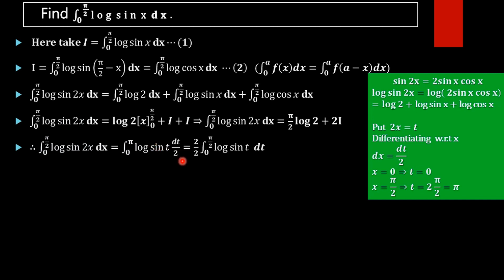Now we update the limits. When x = 0, t = 0; when x = π/2, t = 2 · (π/2) = π. So our integral becomes the integral from 0 to π of log(sin t) · (dt/2). Taking the 2 outside, we get (1/2) · integral from 0 to π of log(sin t) dt.